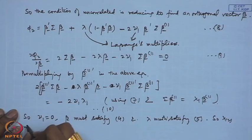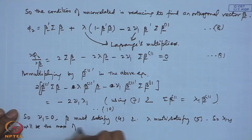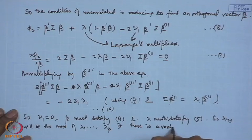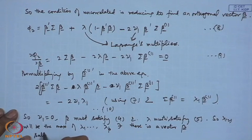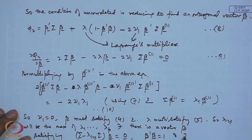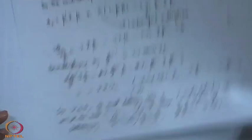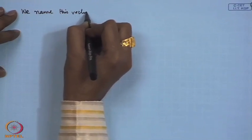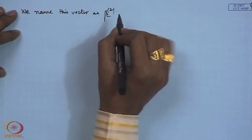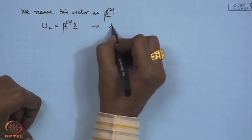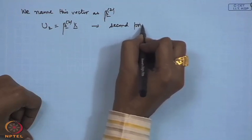Therefore λ₂ is the maximum of λ₁, λ₂, ..., λₚ such that there is a vector β satisfying (σ − λ₂I)β = 0, β'β = 1, and β'β₁ = 0. We call this vector β₂. The second linear combination u₂ = β₂'x is the second principal component.